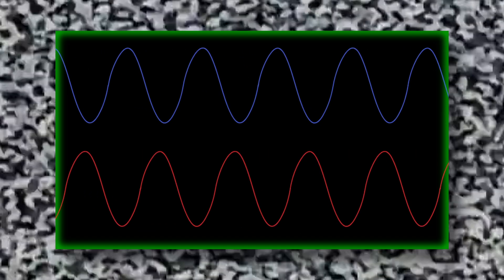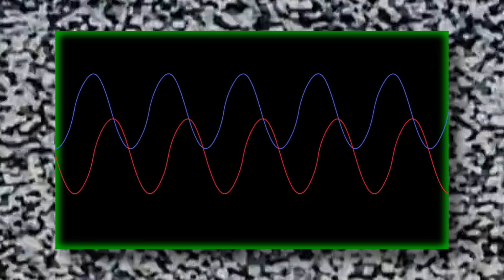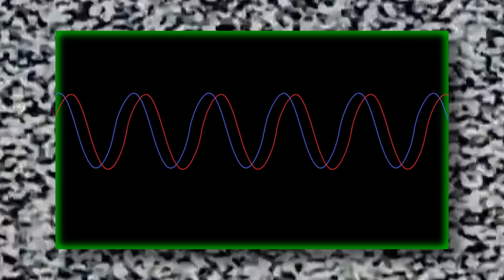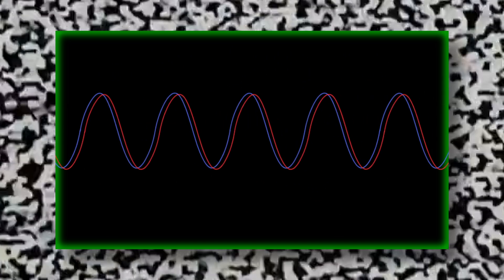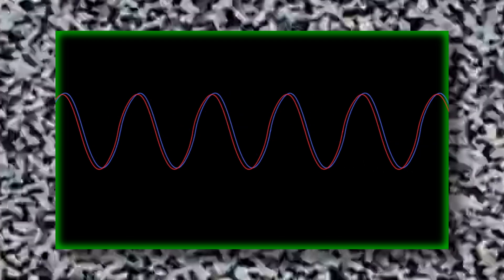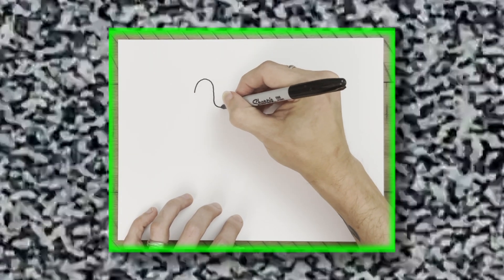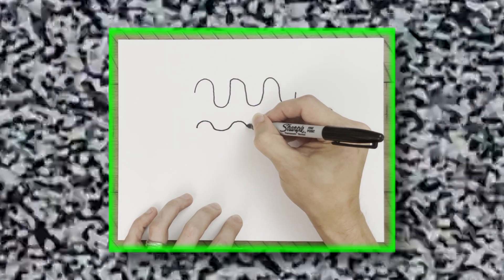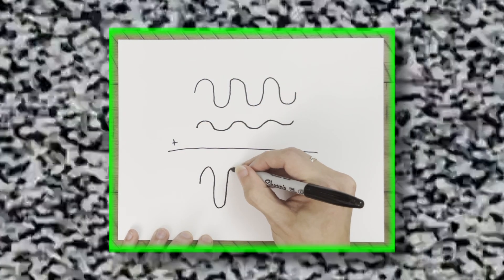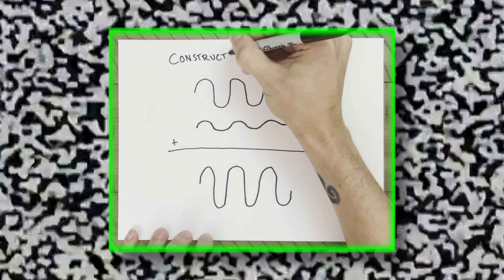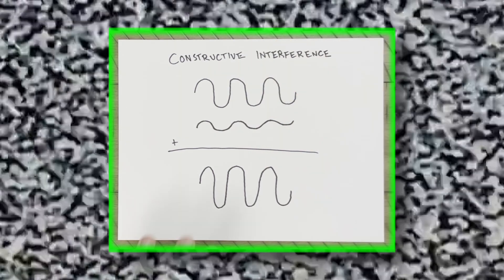When two sound waves cross paths with one another, you have areas of high pressure and low pressure interacting with other areas of high pressure and low pressure. I know this is all starting to sound kind of like a weather forecast, but we're almost to the point. Basically, when highs combine with highs or lows with lows, it results in constructive interference, which is amplification. Everything gets louder.